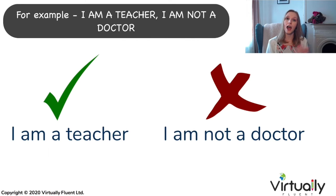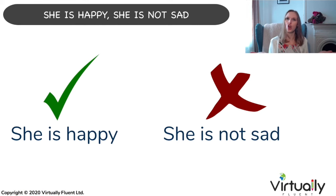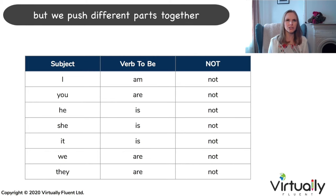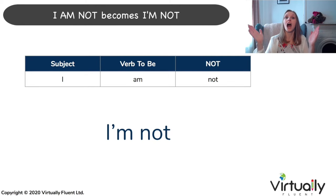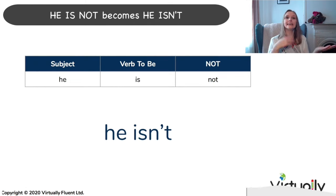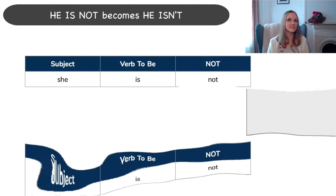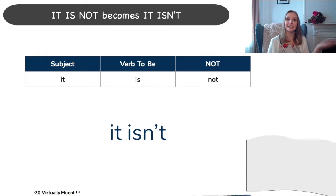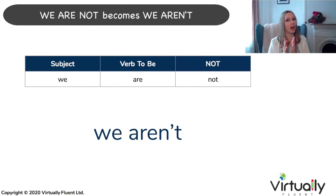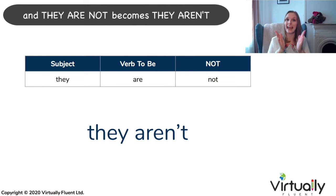For example: 'I am a teacher. I am not a doctor.' 'She is happy. She is not sad.' Remember, in the positive we pushed the words together — it's the same in the negative, but we push different parts together. I am not becomes I'm not. You are not becomes you aren't. He is not becomes he isn't. She is not becomes she isn't. It is not becomes it isn't. We are not becomes we aren't. And they are not becomes they aren't.